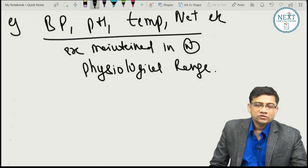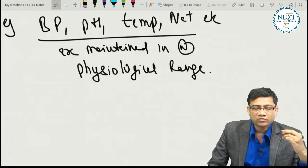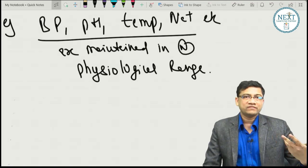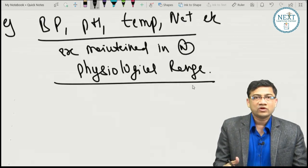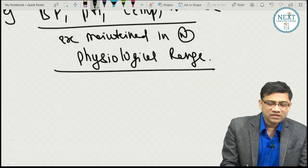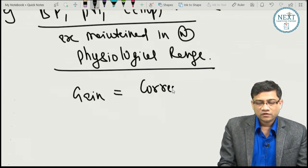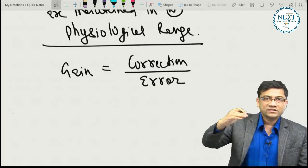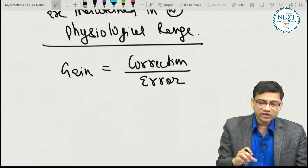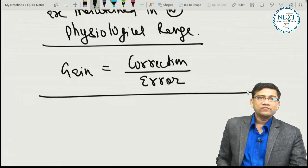Derangements are pathological, and the goal is to correct them back to normal. Every system has limits. How the body corrects deviations — via negative feedback or positive feedforward systems — will be discussed in each system's physiology. A related concept is 'gain,' defined as the correction produced divided by the error.